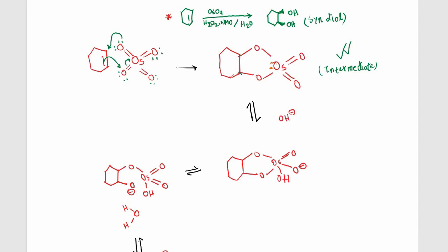The hydroxyl ion comes from the hydrogen peroxide here and attacks this osmium atom. As a result, this double bond will break and the electrons will shift towards the oxygen atom here. So this oxygen atom will be left with a negative charge on it.